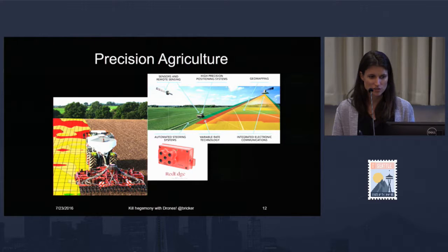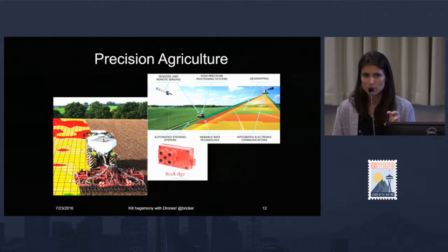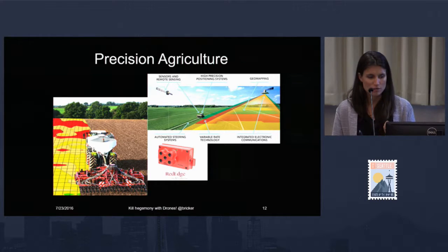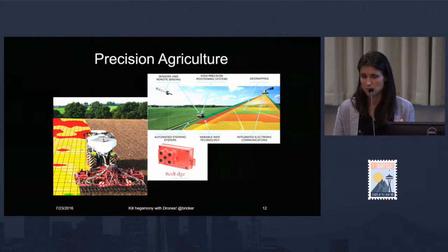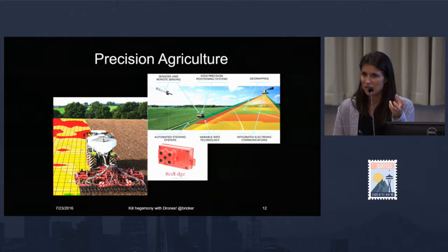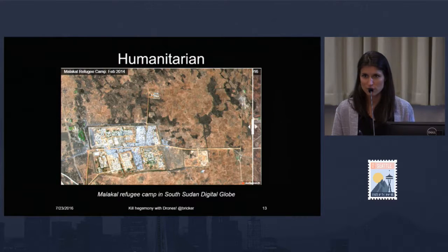Precision agriculture is one industry that has made remarkable progress in terms of delivering timely information to farmers. Micasense is a local company that develops a multi-spectral sensor that can be mounted to drones. They have exciting examples of how you can identify a diseased tree in the middle of an orchard that you wouldn't otherwise see without this technology. We can learn from these other industries.